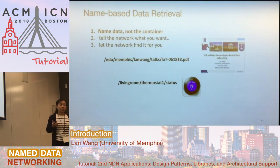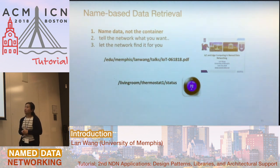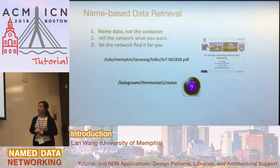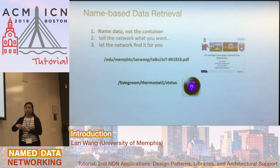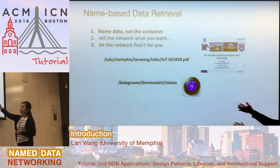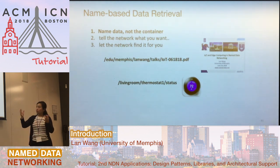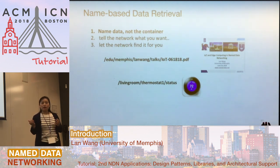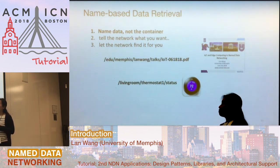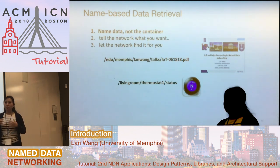Let me give you some ideas about how we do name-based data retrieval. You can just name the data — for example, my slide can be named based on my identity, what kind of content it is, and the file name. If you want to retrieve temperature data, you can just name it based on the room, the thermostat, and its status. This is very intuitive for application developers. The application tells the network what it wants, and the network finds it.